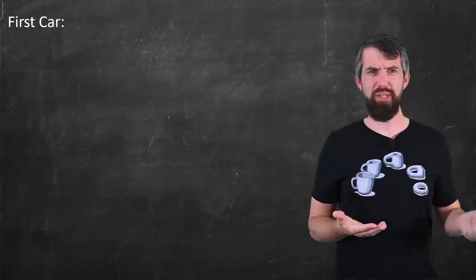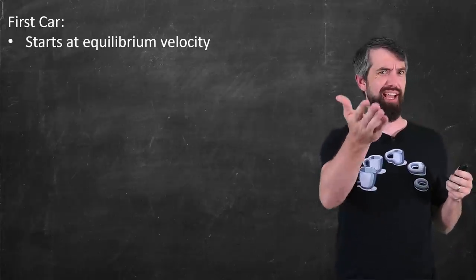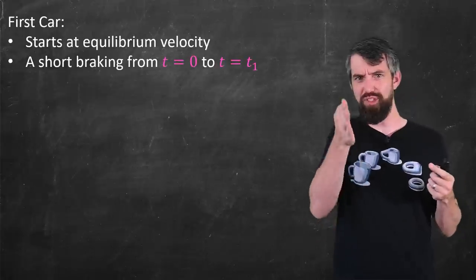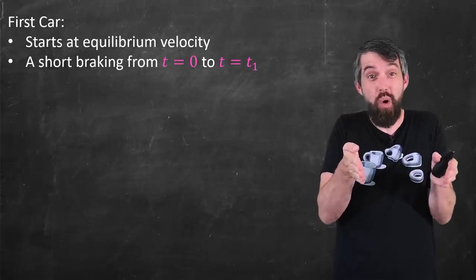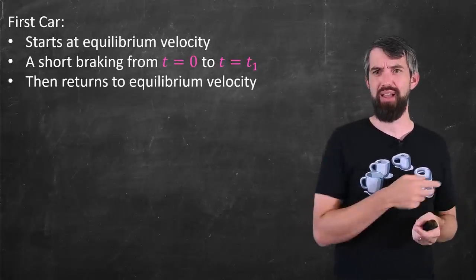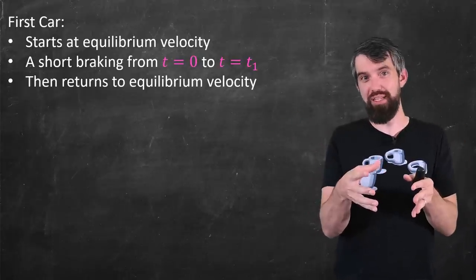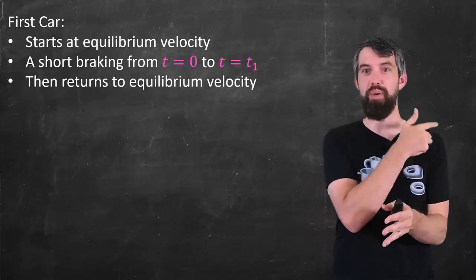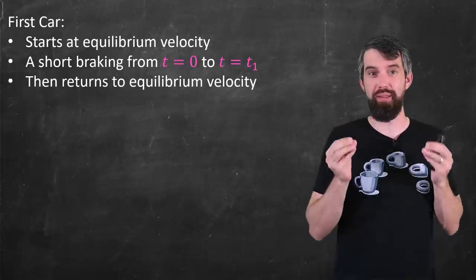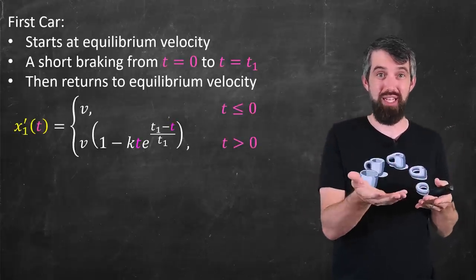So, the first car, a very simple little model we can come up with. All I care about is it's starting at the equilibrium velocity, it brakes for a little bit, maybe from zero to some other time like t_1, and then it just accelerates back up to the equilibrium velocity. I'm imagining that a ball rolls across the road, one person breaks aggressively, what is the perturbation that happens behind them? Just sort of modeling that quick little break. So, I just need to come up with some function to describe this velocity that respects that.